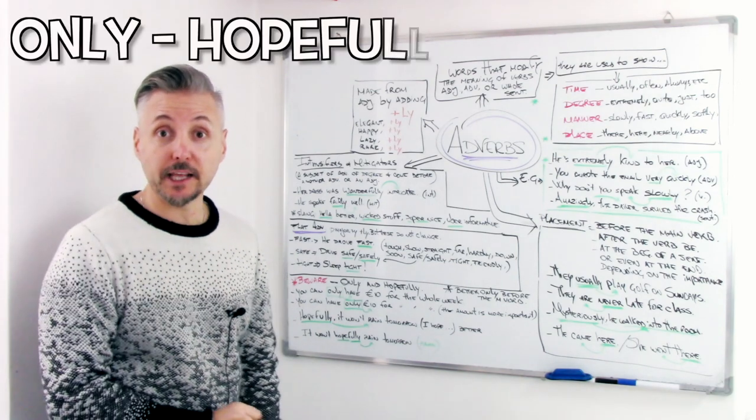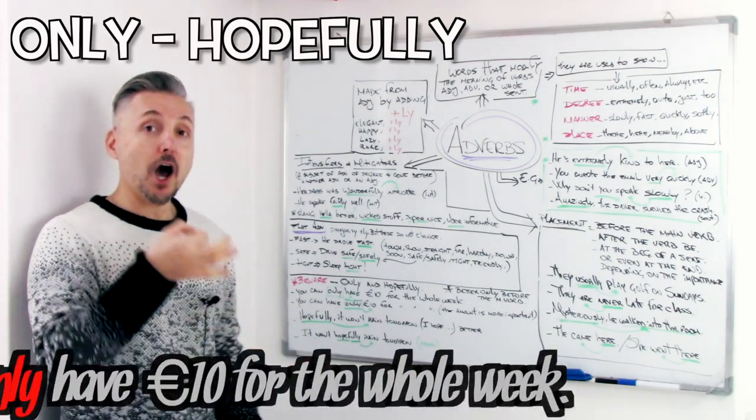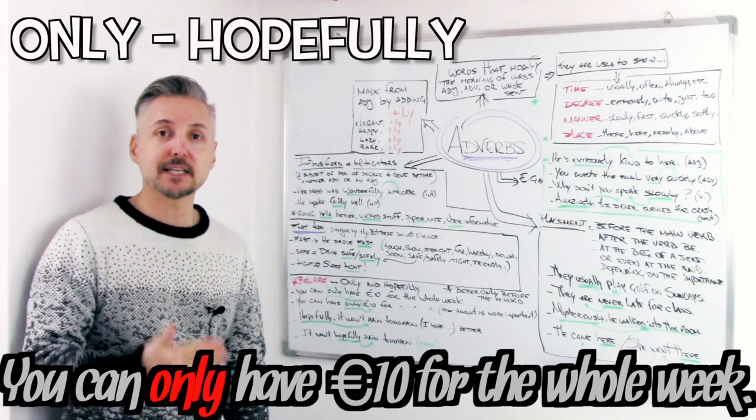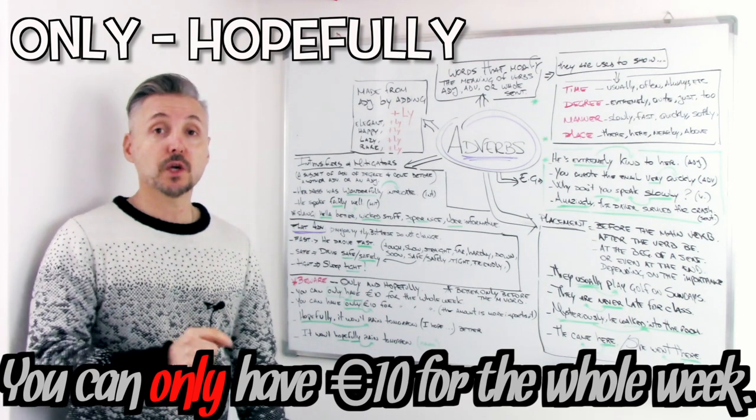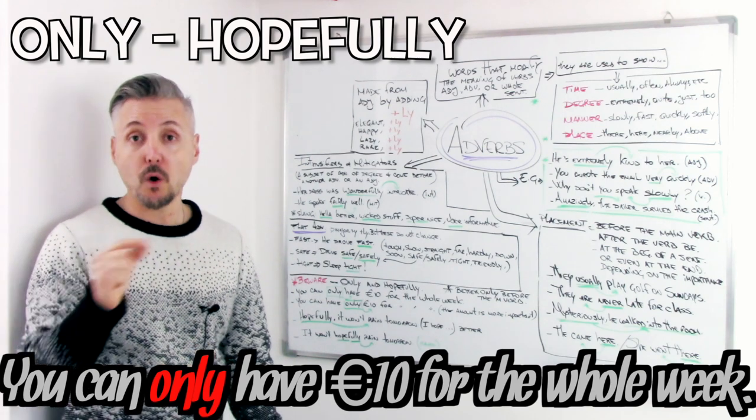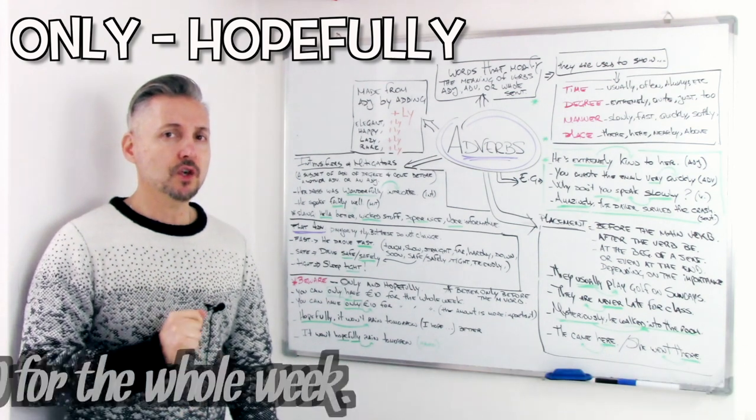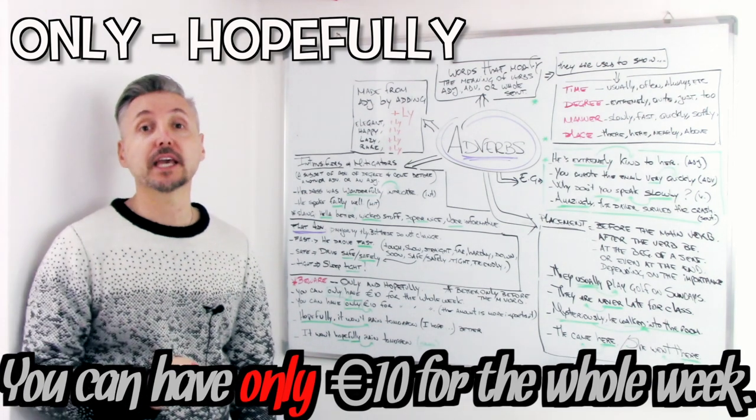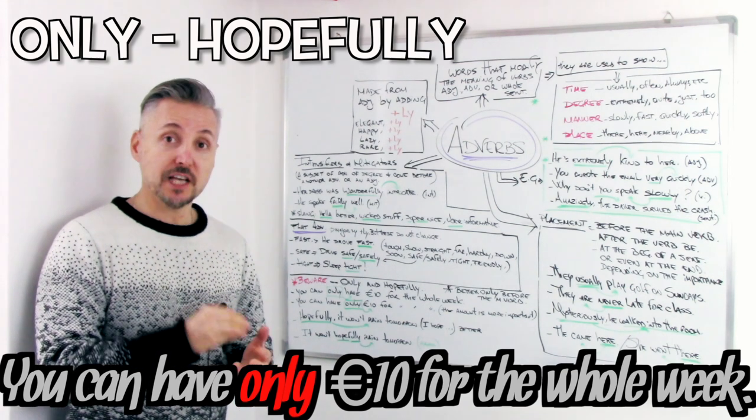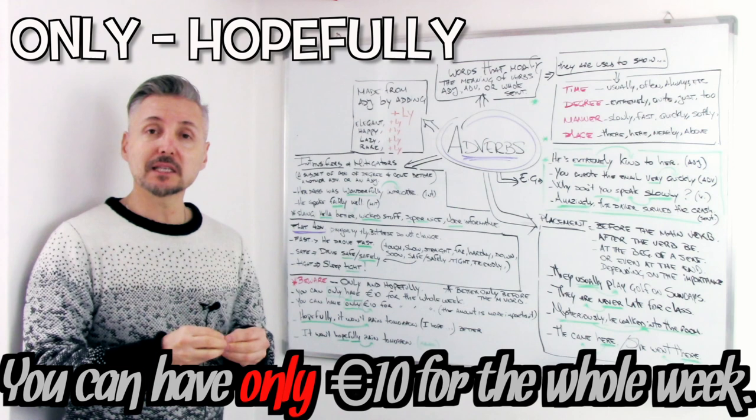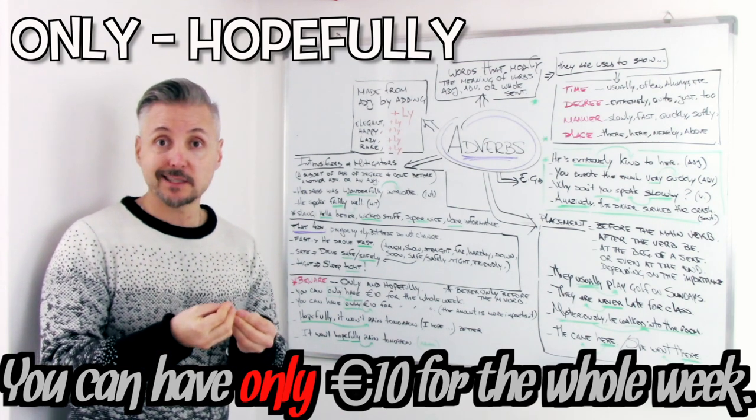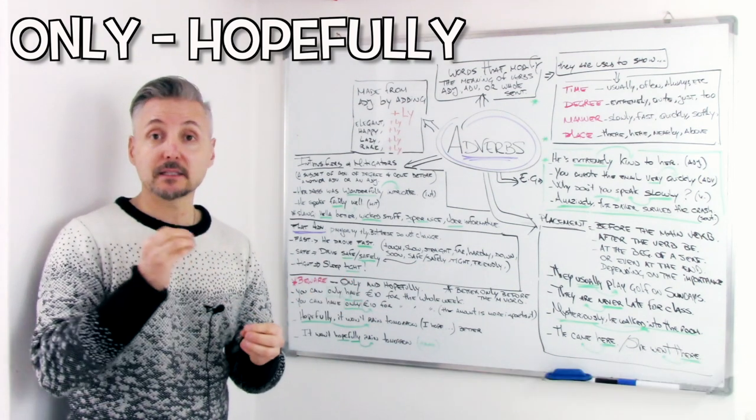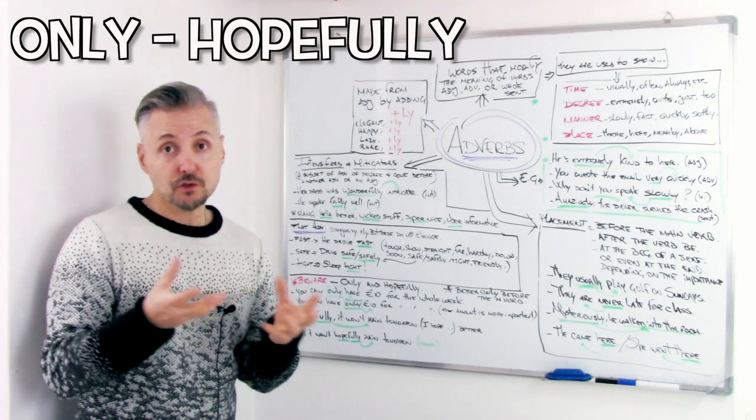Let's take a look at them. You can only have 10 euros for the whole week. For example, a father says that to a son or to a daughter. You can only have 10 euros for the whole week. Now, what about if I said you can have only 10 euros for the whole week. If I said only 10 euros for the whole week, that means that the stress is in the amount. Right? 10 euros only. The difference there is obvious. We place only before the amount in this case. Or before the adjective that we want to stress.